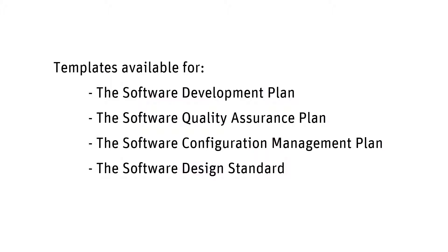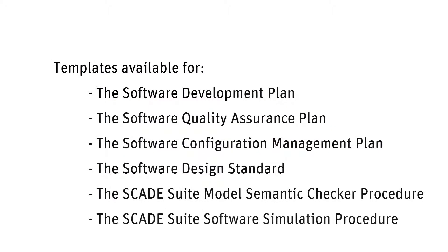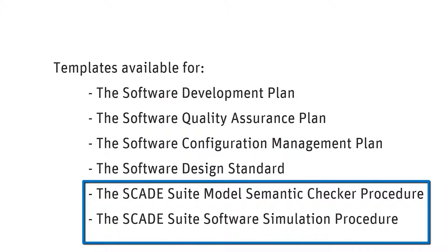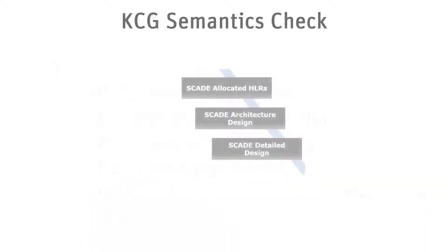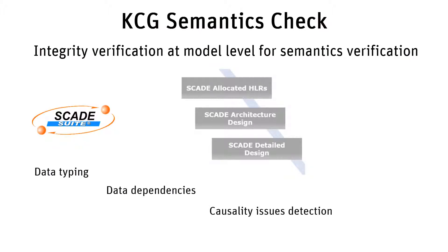Additional procedure documents can be provided, such as the SCADE Suite model semantic checker procedure and the SCADE Suite software simulation procedure for performing model simulation. At the architecture level, consistency checks are automated by SCADE Suite KCG semantics check. This feature performs specification integrity verification at model level for semantics verification of data typing, data dependencies, causality issues detection, and initialization errors.